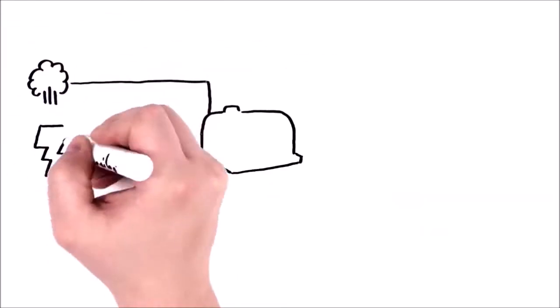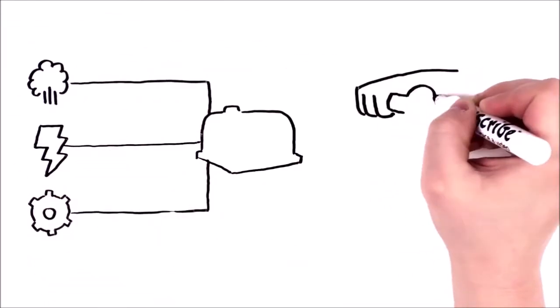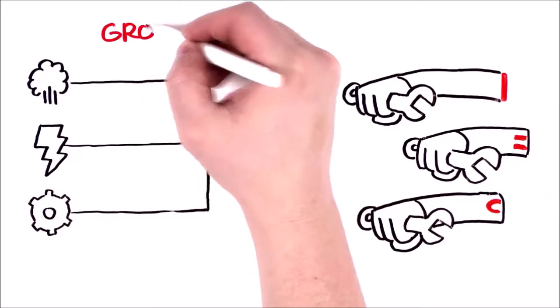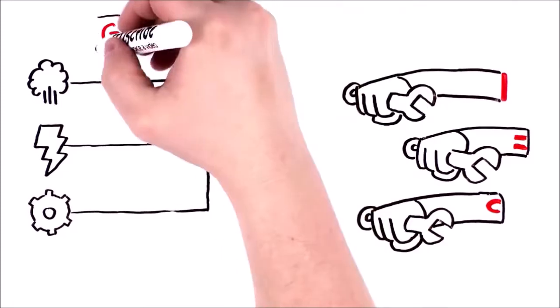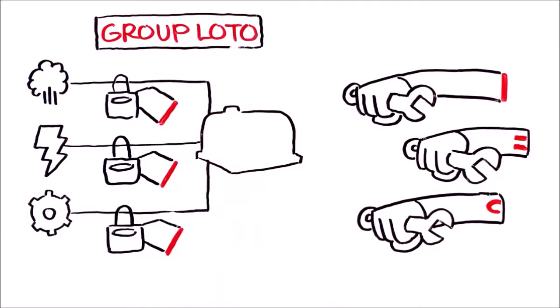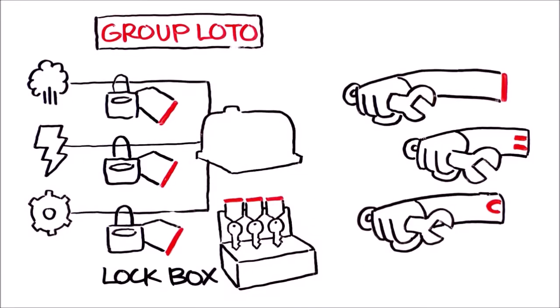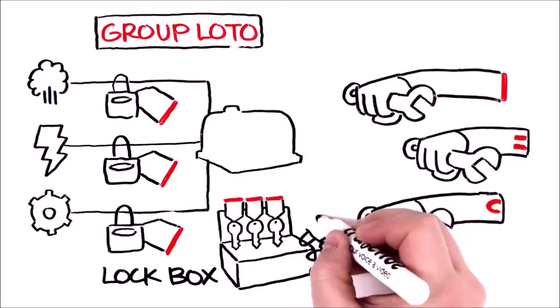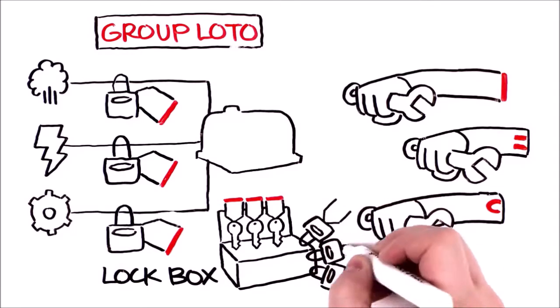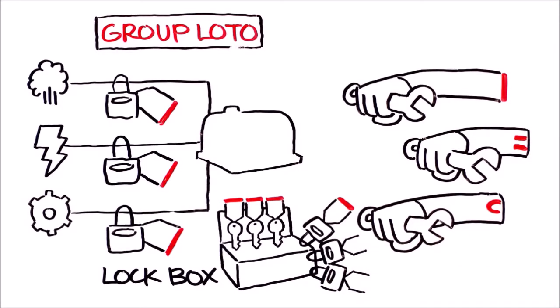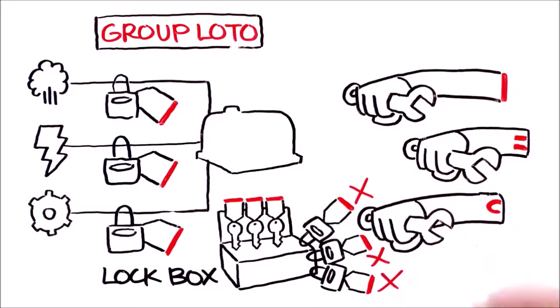What if the equipment has many energy sources, plus it's not just you? It's a group of people performing a service activity on the equipment. In this type of situation, group LOTO can be done. With group LOTO, it's typical to apply a different lock and tag to each energy source. Then place all the keys from these locks in a lockbox. Then all employees working on the equipment place their own lock on the lockbox while working on the equipment. But in these cases, each person must put their own lock on the energy isolation device. Under no circumstance is it ever acceptable for one person to lock out equipment for another.